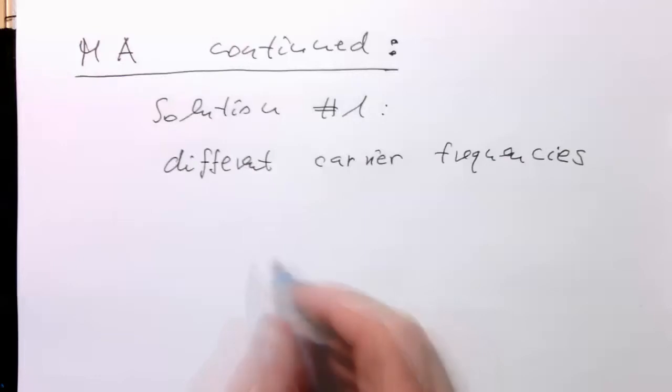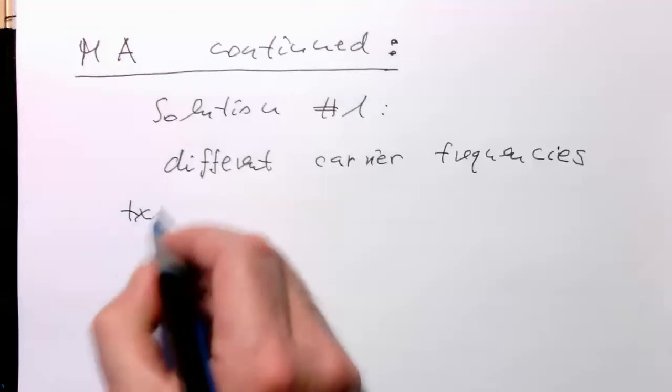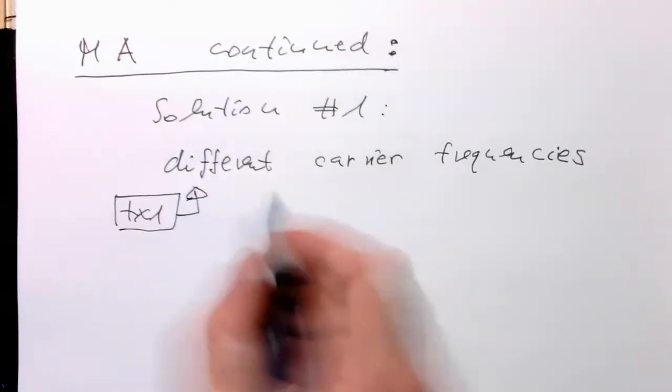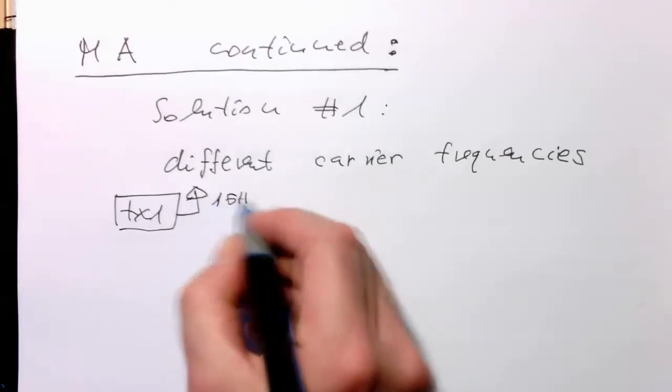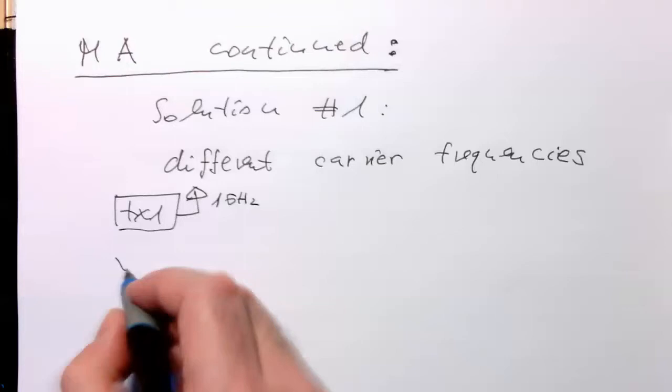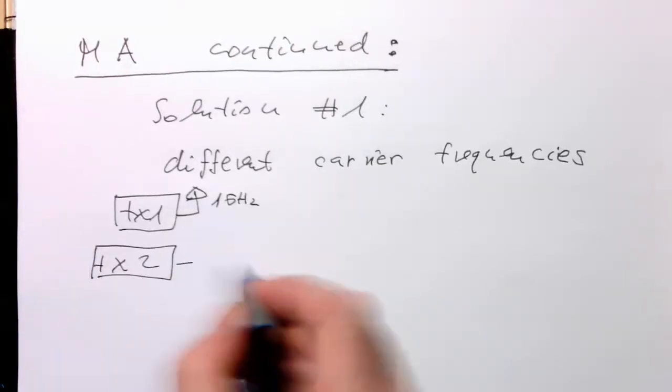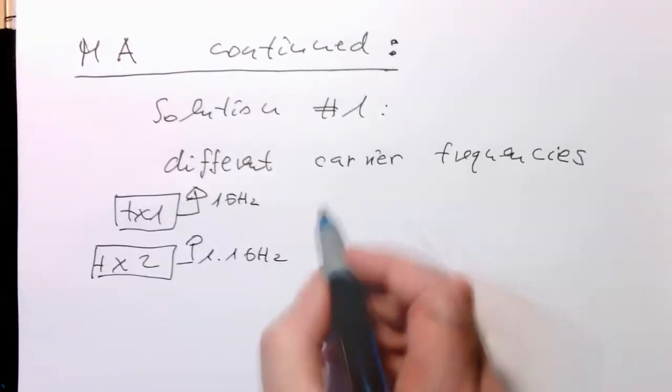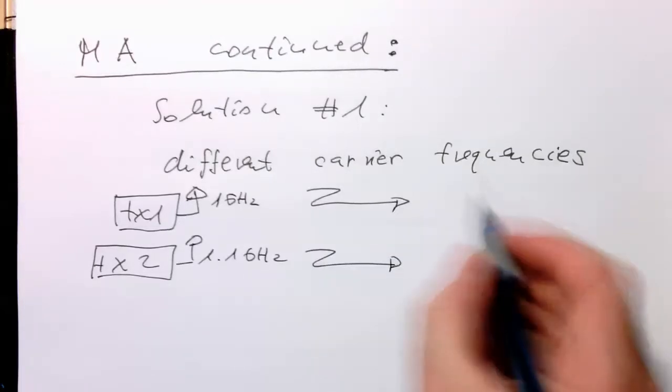Very simple. We just define that our transmitter 1, TX1, operates, for example, at 1 GHz and then TX2 operates at 1.1 GHz. And then, obviously, with that, we have no interference.